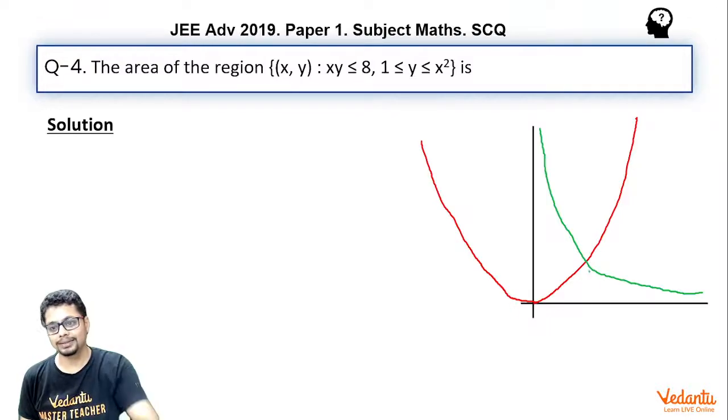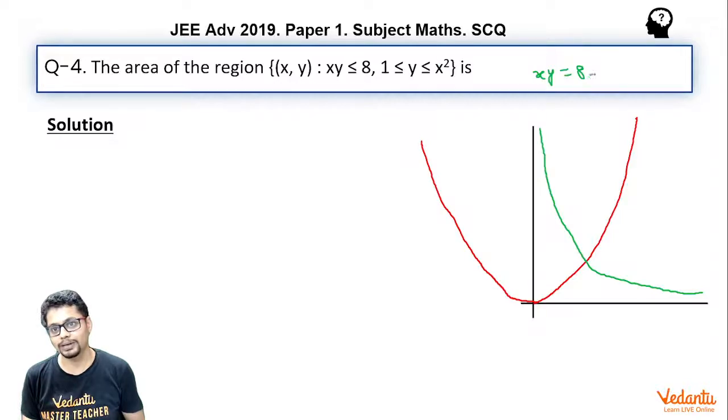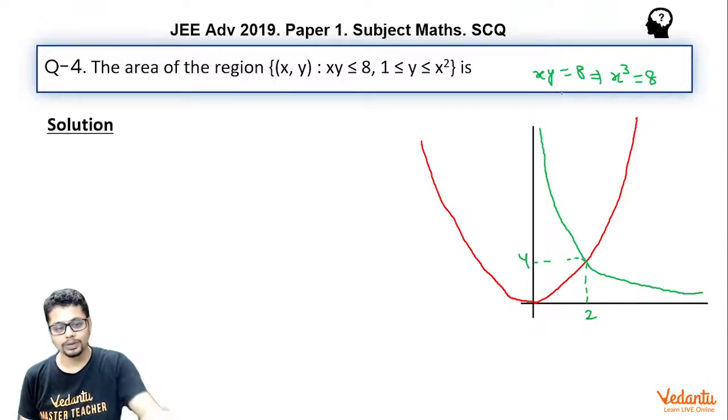Now where do they intersect? So here to find where they intersect, xy = 8 and x² = y. You may replace y as x². So xy = 8, you may replace y as x², and it becomes x³ = 8. So basically x becomes 2, and if x is 2, what about y? y is 4, because y is x² or using xy = 8, so y is 4.